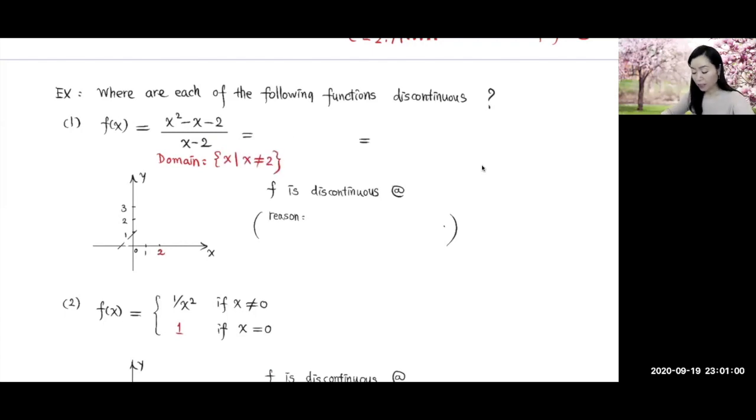Alright. So after this, let's try to factor the numerator. So it's going to factor into this using trial and error. Now x minus 2 is going to cancel out, giving you x plus 1.